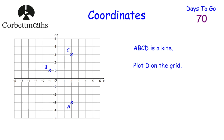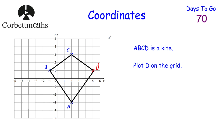Now we're told that ABCD is a kite — we've got points A, B, and C and we need to plot D. Remember a kite has one line of symmetry. The line of symmetry runs along AC. Point B is three units to the left of that line, so point D must be three units to the right, giving us D at five, one. Well done if you got that. As you can see, it's a kite with one line of symmetry down the middle.